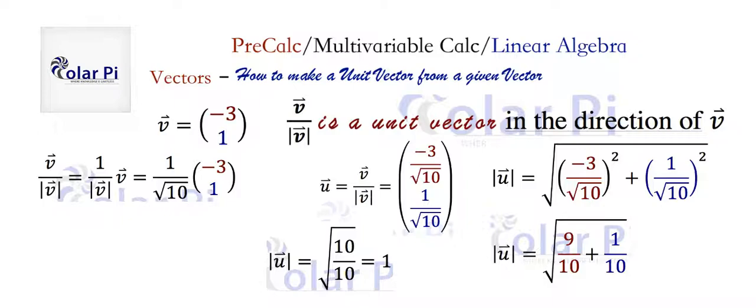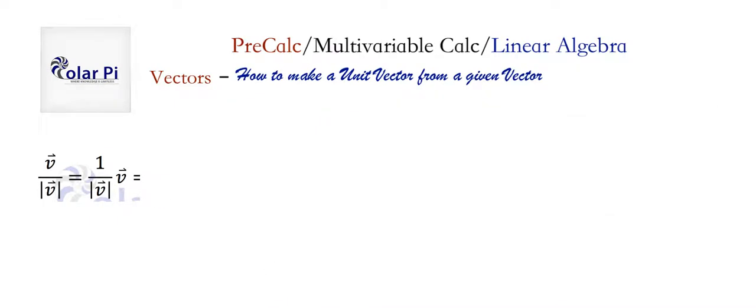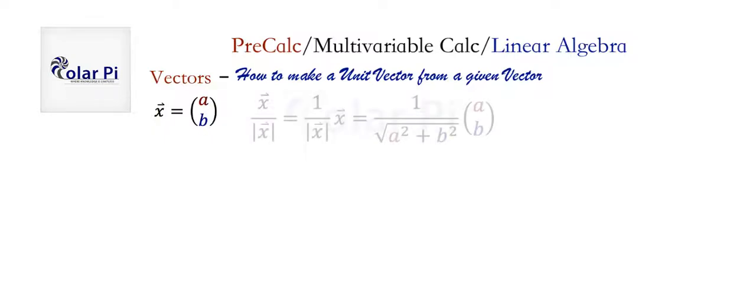So then now on to the second part of this video, which is explaining why this process works generally. So in general, let's take a vector X with components A and B. Then we know that the way we turn X into a unit vector is by what we just did. And we know from the video on the norm and magnitude of the vector that the length of this vector is the square root of A squared plus B squared. You probably gathered that from what I just said a little bit ago.